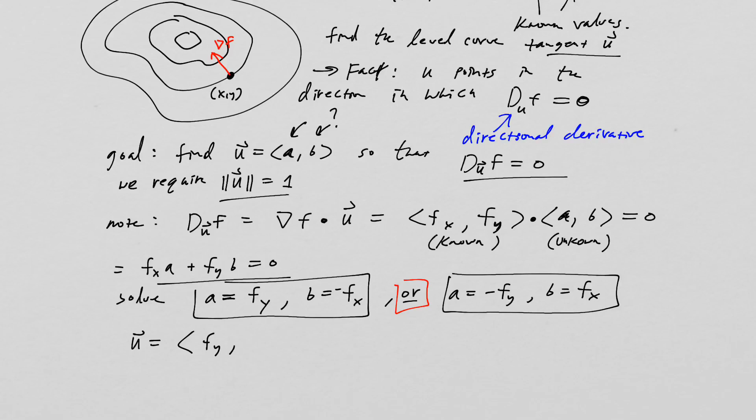So that means we can write u equals f_y and then b equals negative f_x. These are the only values that if you plug them in there that will equal zero. I really shouldn't say only values, though, because actually any scalar multiple would also work. So in fact, we need to now normalize by the gradient vector magnitude there so u has magnitude one.